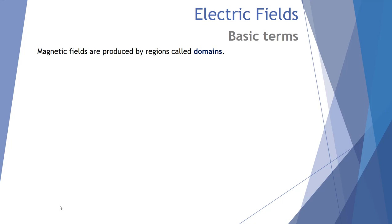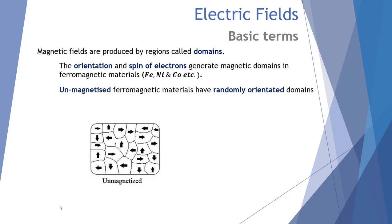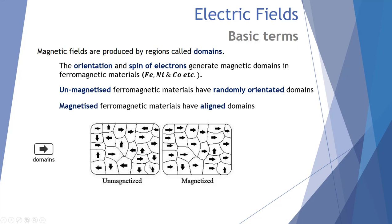Magnetic fields are created by regions called domains, which are established by the orientation of spin of electrons in certain ferromagnetic materials. In a ferromagnetic material they're randomly orientated, and these little domains with north and south dipoles cancel each other out. Generally a ferromagnetic material doesn't have an overall magnetic field. However, if we align them in the presence of another magnetic field we can create a permanent magnet.